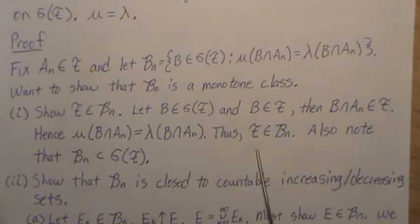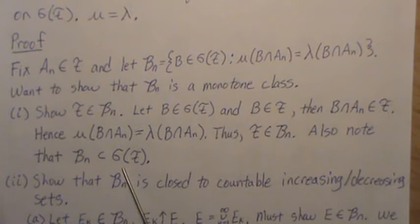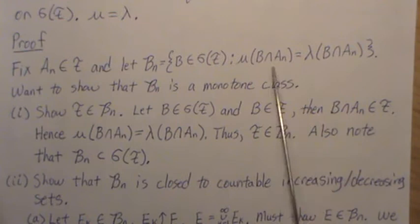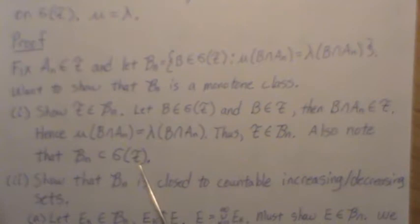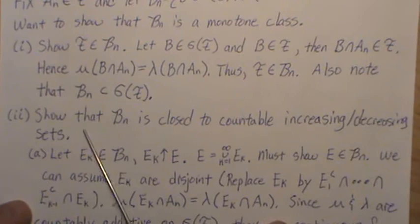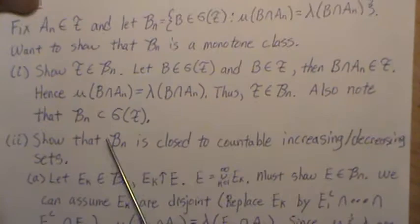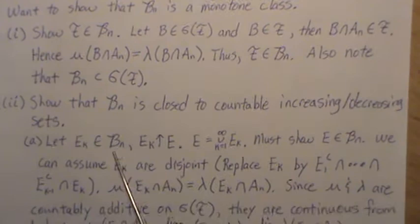Also note that B_n is a subset of the sigma field sigma(F), because not all sets B in the sigma field necessarily create this agreement situation. So B_n is a subset of that minimum sigma field generated by F. Now let's show that B_n is closed under countable increasing or decreasing sequences — that's what a monotone class requires. The fact that it also contains the field is another result we'll use in a later step.